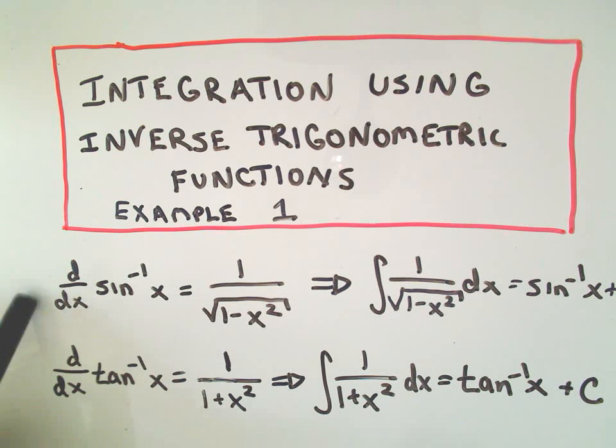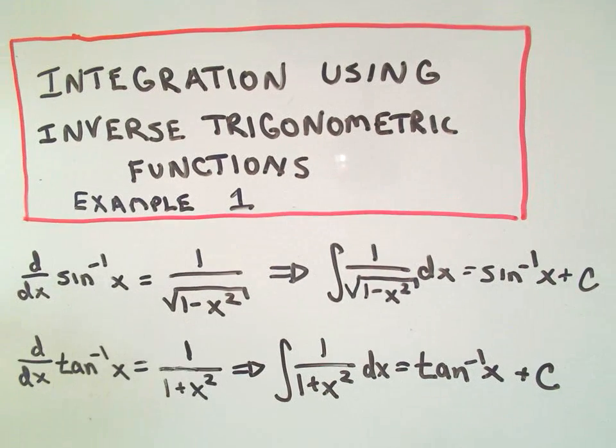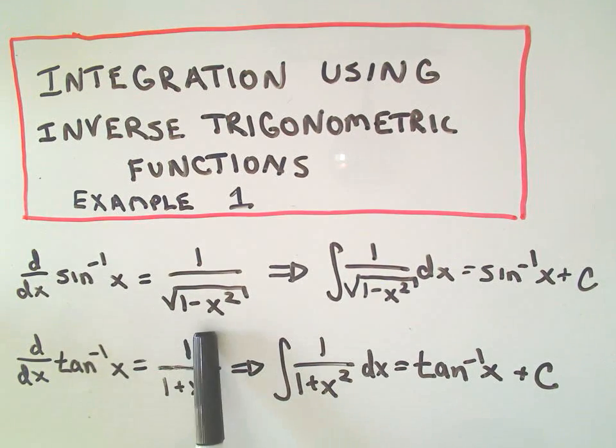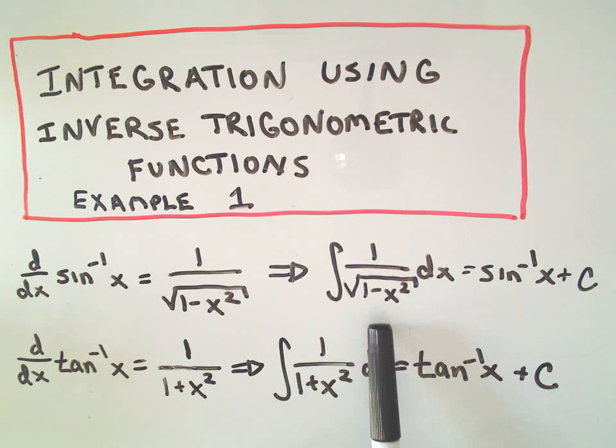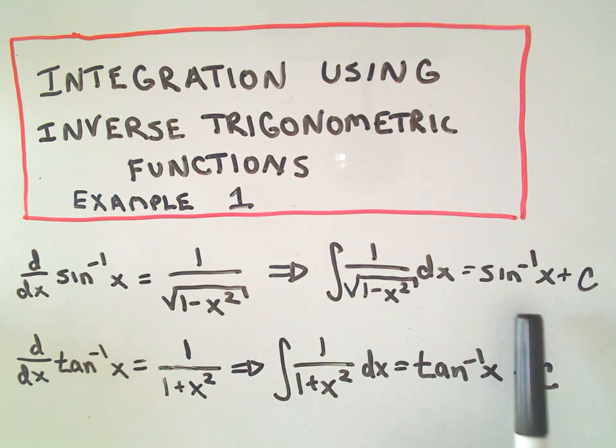The two most useful formulas are here at the bottom. Recall that the derivative of arcsine is 1 over the square root of 1 minus x squared. Well, that means if we integrate that function, 1 over the square root of 1 minus x squared, we'll just get arcsine plus c back.